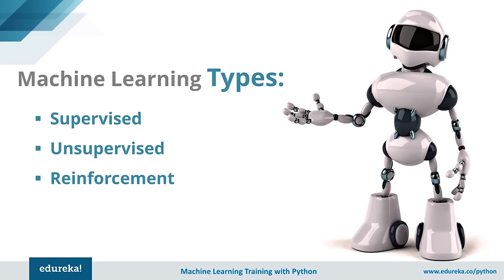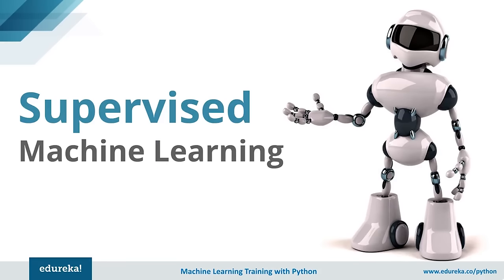Machine learning can be sub-categorized into three different types: supervised learning, unsupervised learning, and reinforcement learning. We'll see what each is, how they work, and how each is used in banking, healthcare, retail, and other domains.